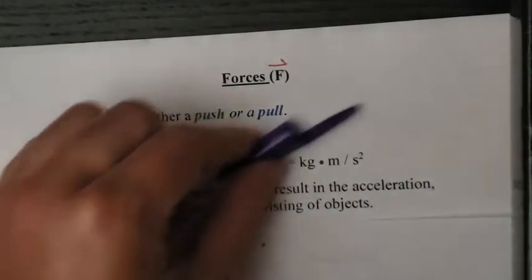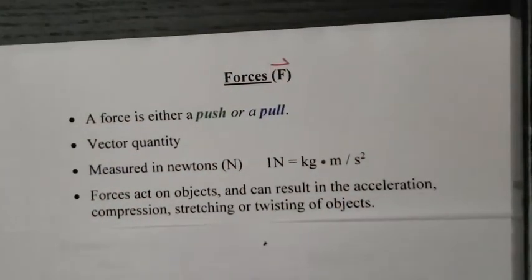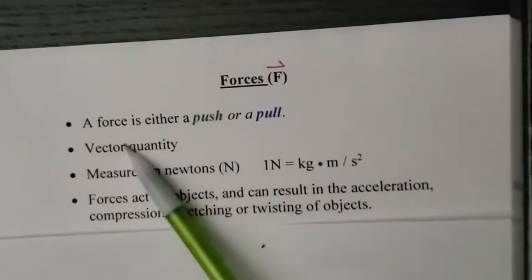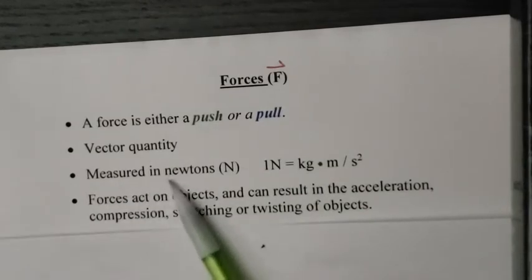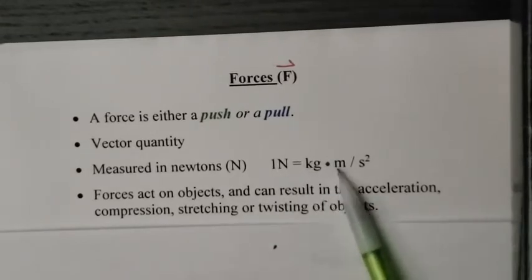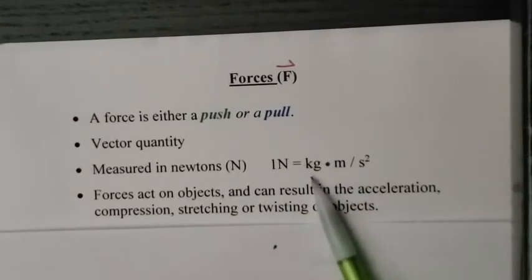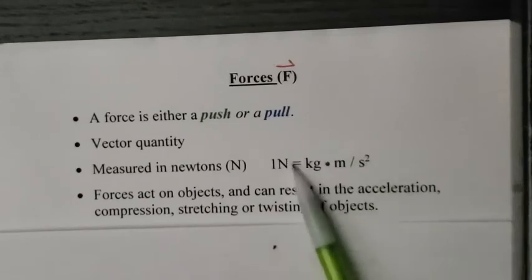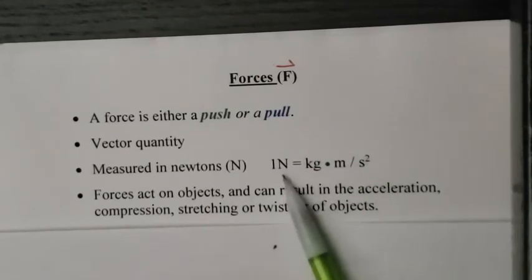A force can be pushing or pulling of anything. We know it's a vector quantity because I have the little arrow above it. It's measured in a unit called newtons. So the symbol for newtons is capital N. A newton is a kilogram meter per second squared, which is a mass times an acceleration, but we simplify it to simply capital N.